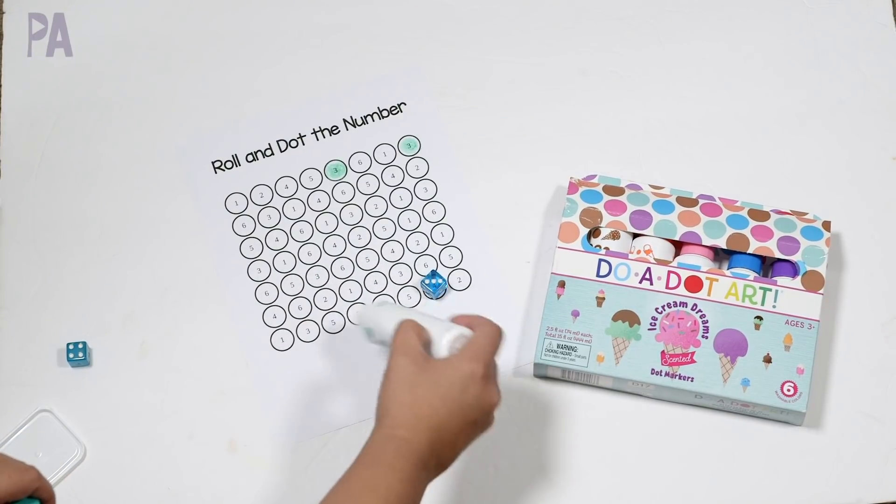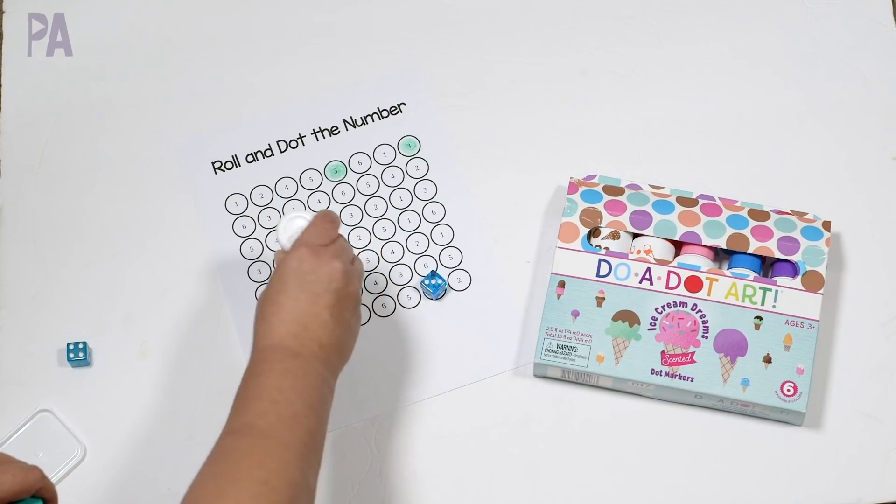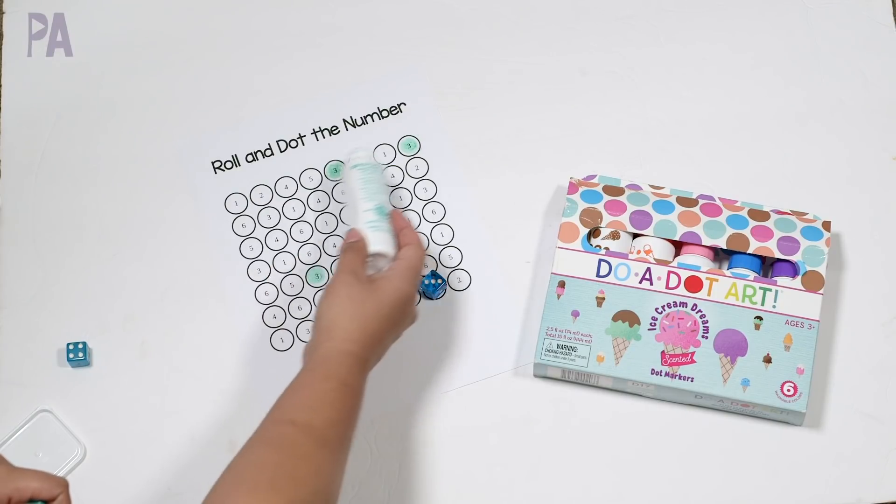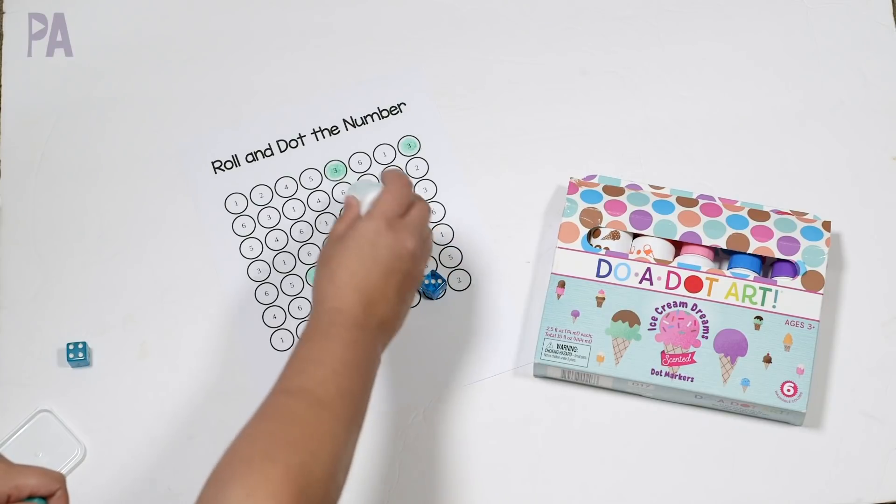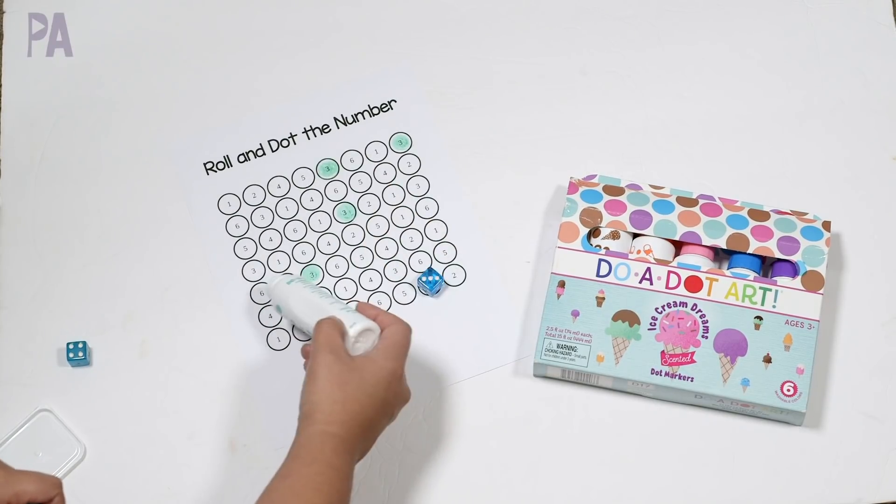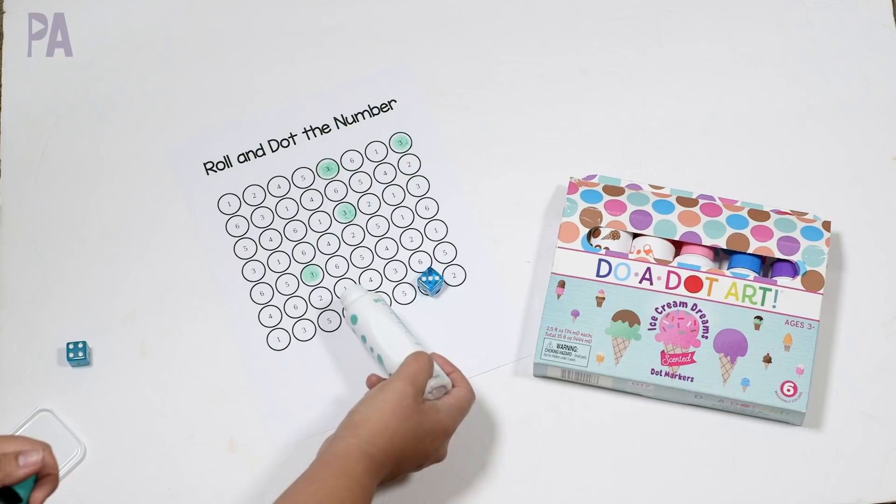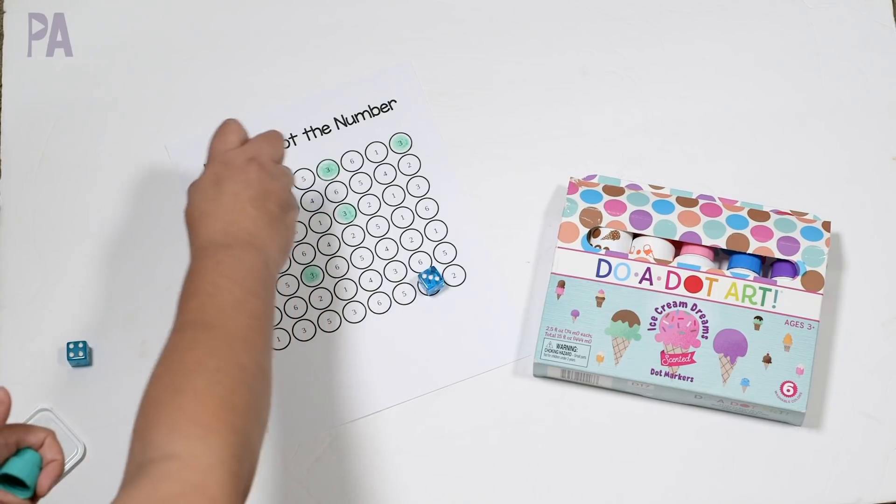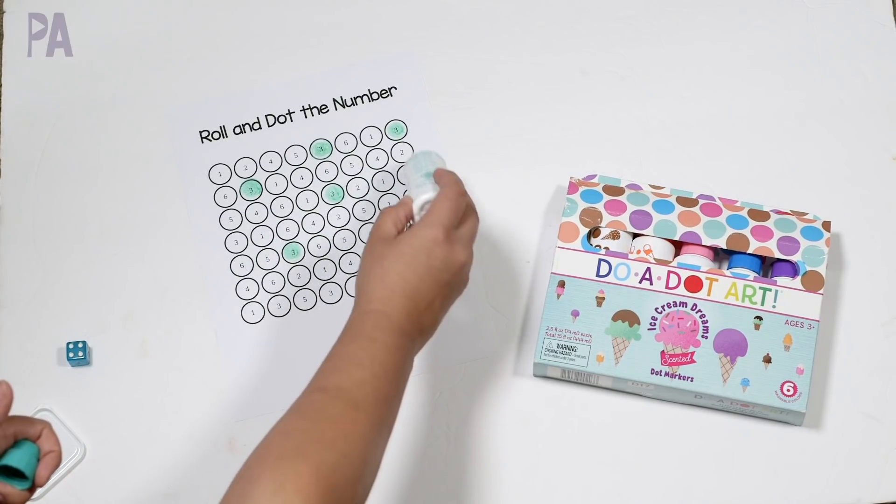What probably will happen is your child will look all over the page for all these numbers. And that's great. But what you want to try to encourage, if you can, is to go from left to right as you would for reading. So visual scanning for reading skills. If they don't do it very well, then you can encourage them. Okay. Well, I think you missed some. Obviously there's some on here that I missed. So why don't we start at the top and go all the way across. And so you have a little bit of learning opportunity there so that they get in the habit of going left to right.